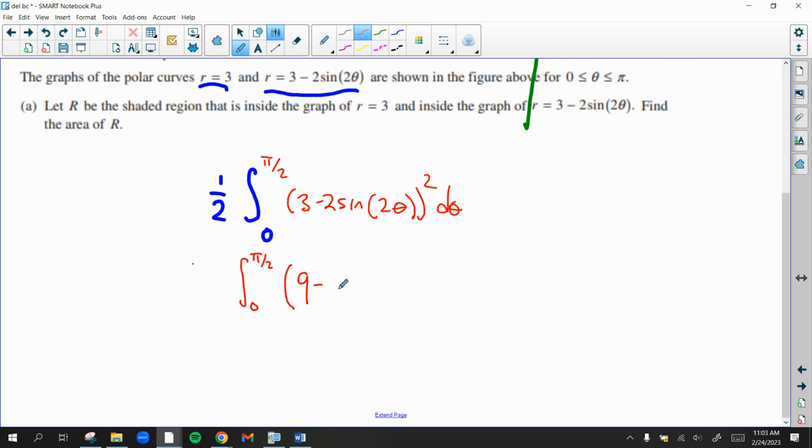Square, double, 3 times 2 is 6 times 2 is 12. And then square, plus 2 sine 2 theta would be 4 sine squared 2 theta.